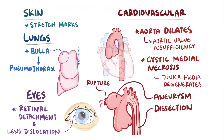An aneurysm is an outpouching of a vessel, which weakens its wall even further. A dissection is where the inner wall, or intima, gets a tear, and blood tracks into a false lumen in the vessel wall, which can occlude normal blood flow. An aortic rupture is a full thickness tear, which allows blood to escape the vessel. All of these complications can be fatal.